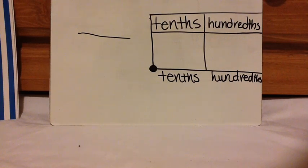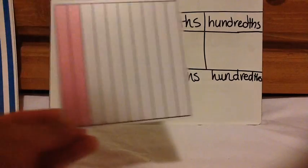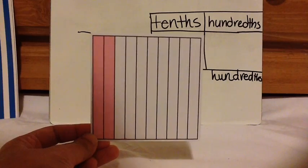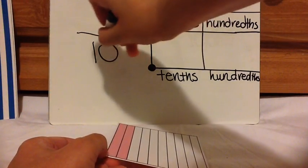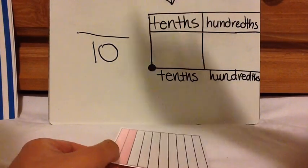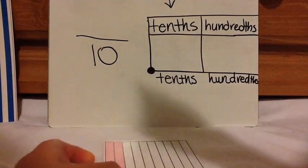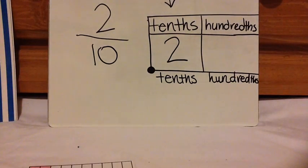Here is the first picture. Write the fraction and the decimal. So if you notice, this is cut into ten pieces. So I will have a ten in my fraction and I will end up in the tenths place in my place value. There are two shaded in, so two tenths.